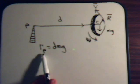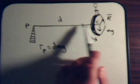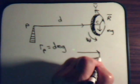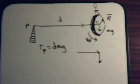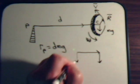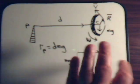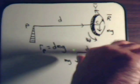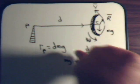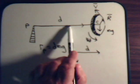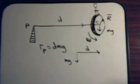What about the direction of the torque at point P? D is pointing in this direction and the weight is straight down. When you take the torque of two vectors, you have to consider them head to head. So here is Mg, here is D, and the torque is D cross Mg. Using the right-hand rule, our thumb is pointing right straight into the board. So the torque from point P is perpendicular to the pivot arm, pointing right straight into the board.